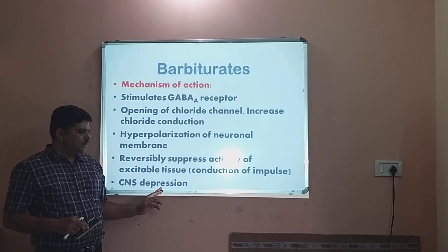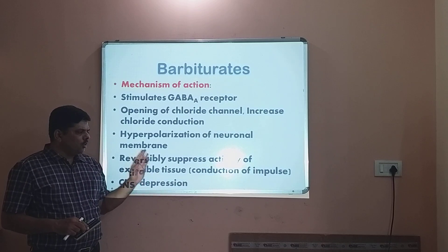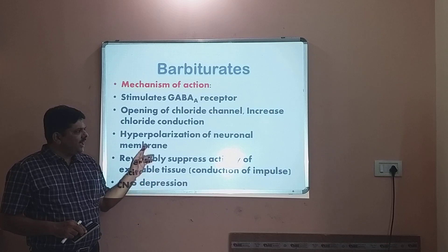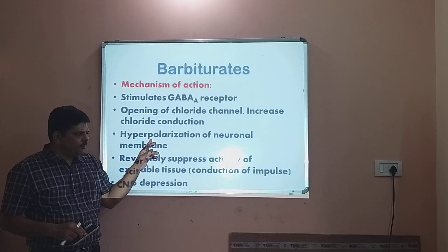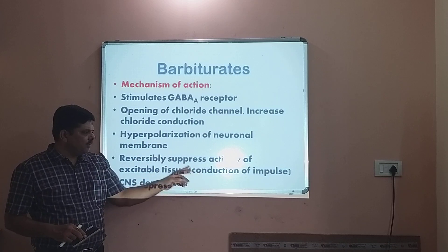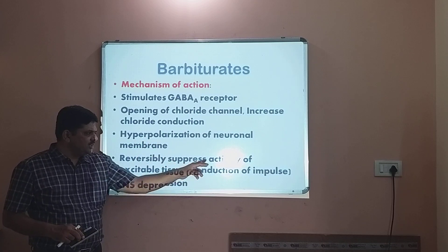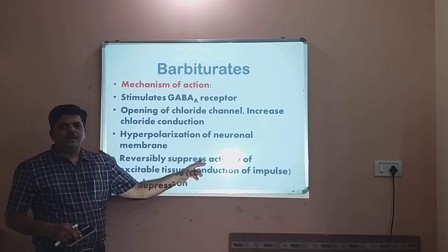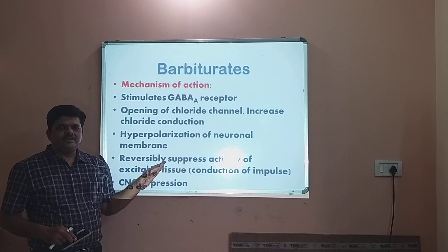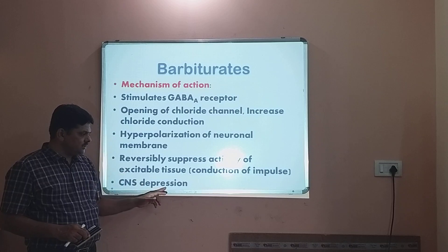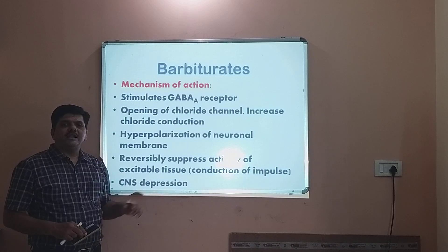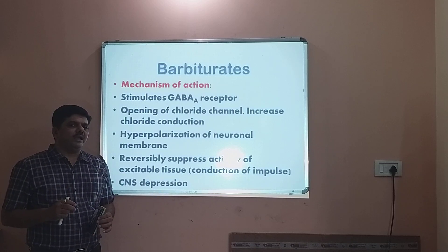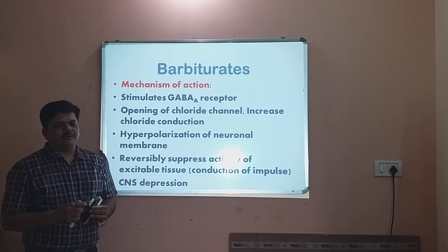Neuron is an excitable tissue. But when it is hyperpolarized, conduction of impulse is suppressed. And when it is suppressed, it produces CNS depression. This is the mechanism of action of barbiturate.